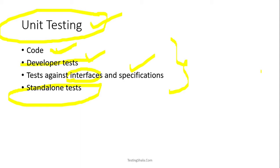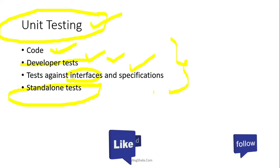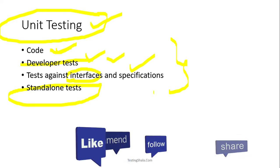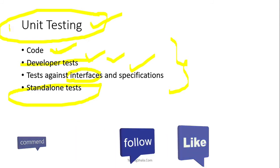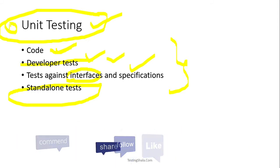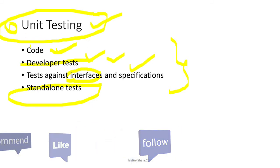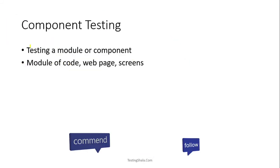Hence unit testing is called a developer test, which is written by developers and is completely a standalone test. This is the first type of testing in the functional testing area.